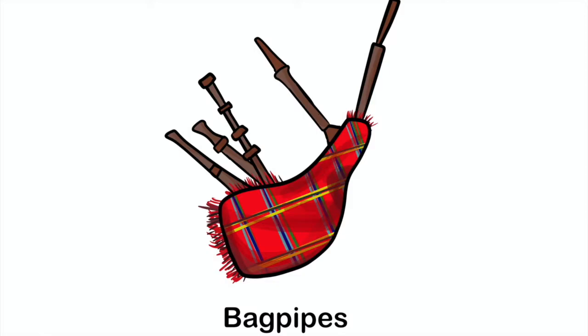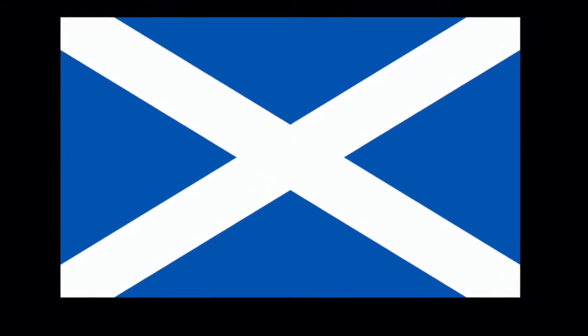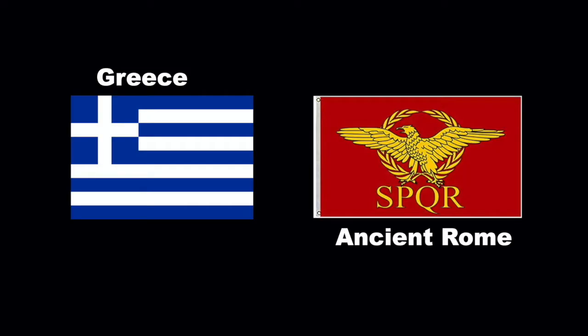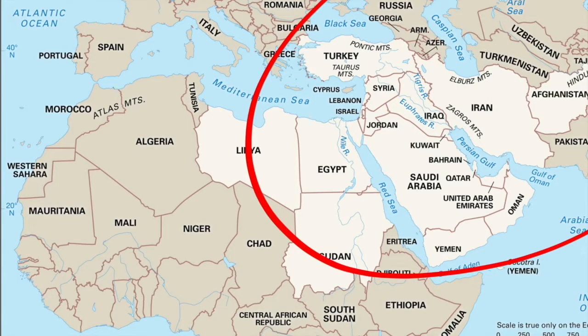The modern bagpipes that we see on TV and hear in Scottish music were created in Scotland, but early versions of the bagpipes were believed to be present in ancient Greece and Rome. Bagpipes are also played across the Middle East today.